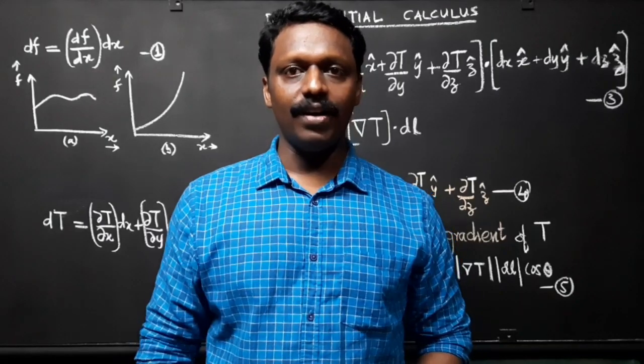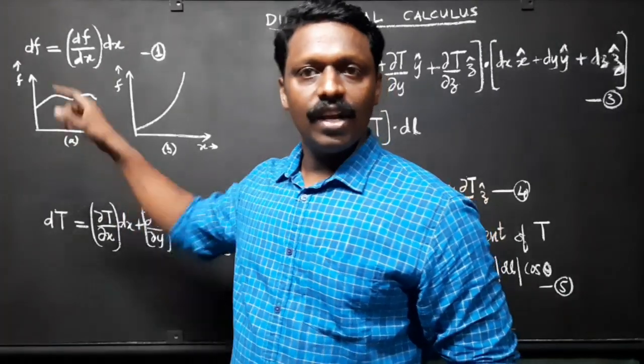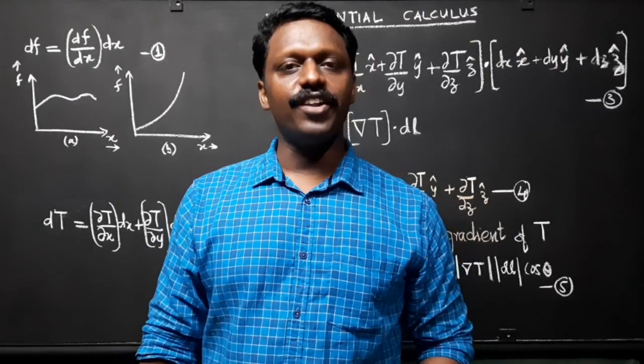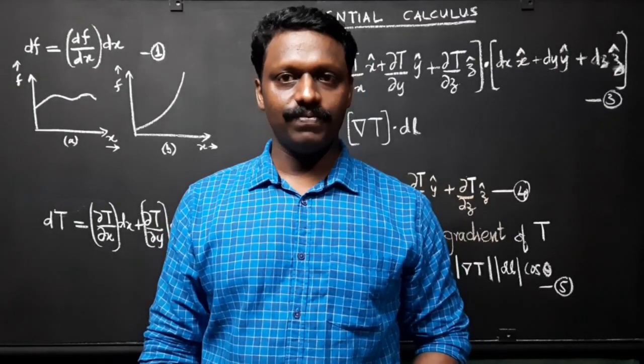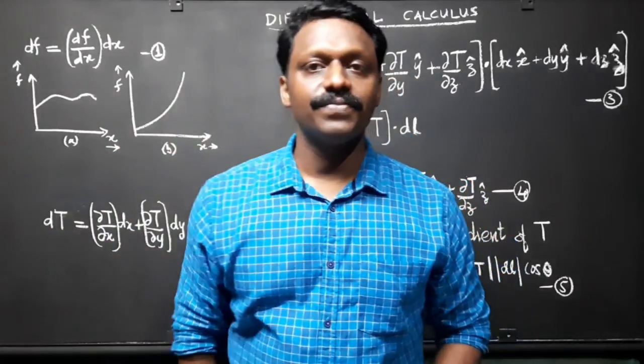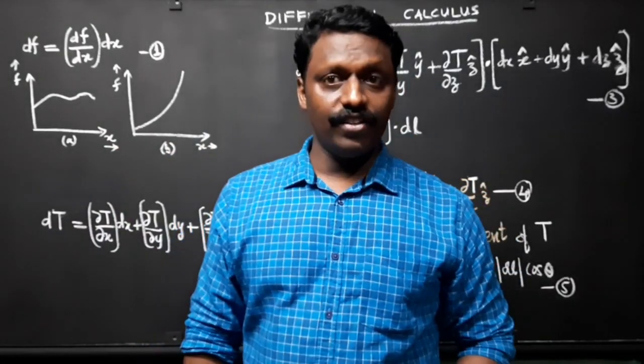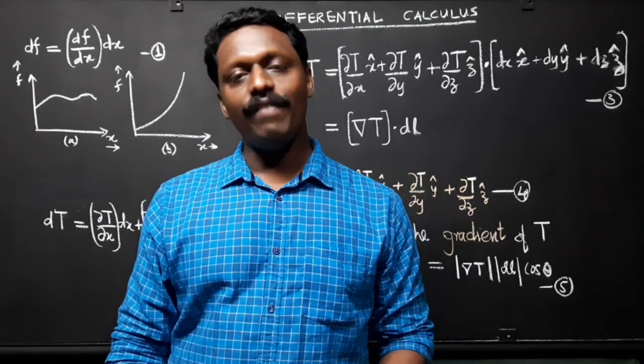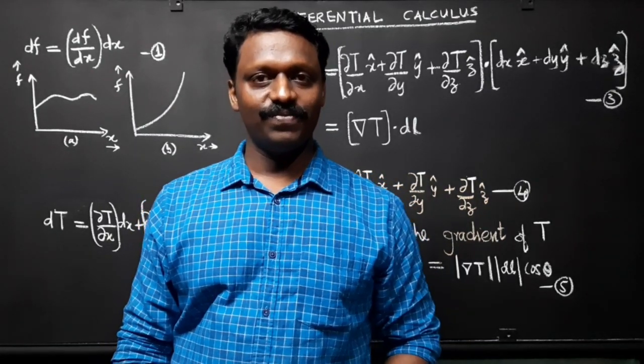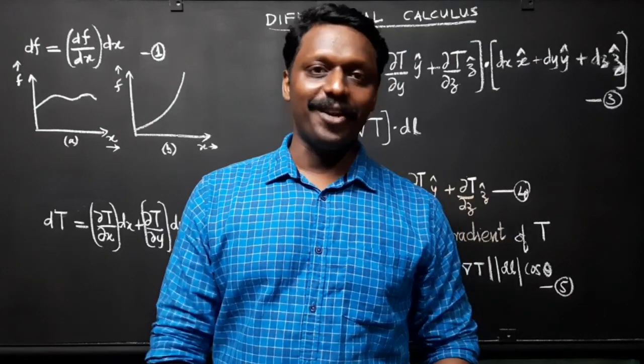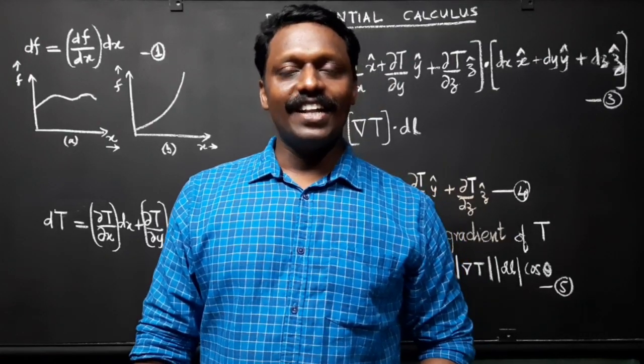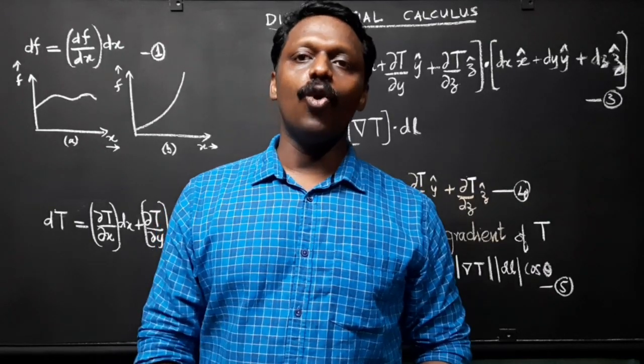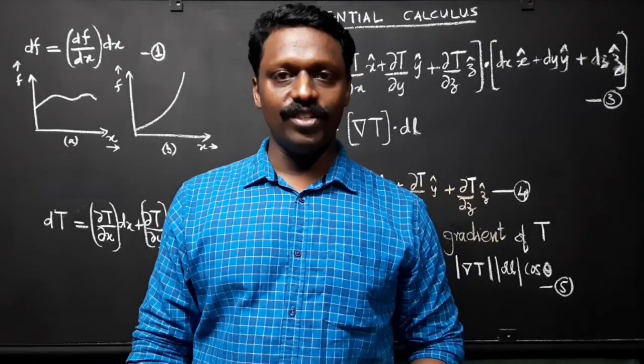For example, in this figure, the function varies slowly with x and the derivative is correspondingly small. In this figure, f increases rapidly with x and the derivative is large as you move away from x equals 0. What is the geometric interpretation? The derivative df/dx is the slope of the graph f versus x.